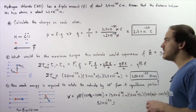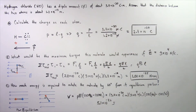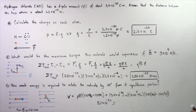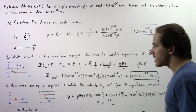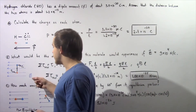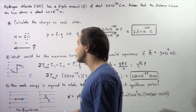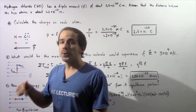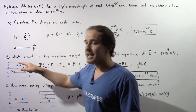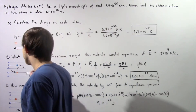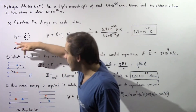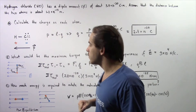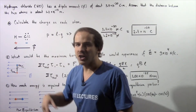Now let's move on to Part B: what is the maximum torque this molecule would experience in a constant electric field of 3 times 10 to the 4 newtons per coulomb? We essentially have an electric field pointing to the left along our x-axis. To calculate maximum torque, we orient our molecule perpendicular to the electric field, so this angle is 90 degrees. We have two torques acting — torque one on the chloride atom and torque two on the H atom, as shown in the diagram.